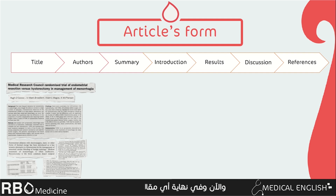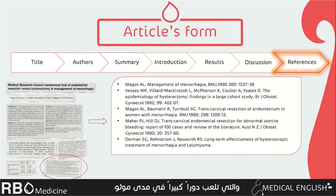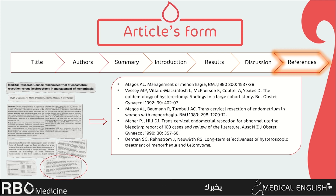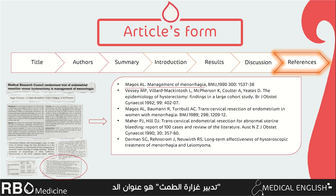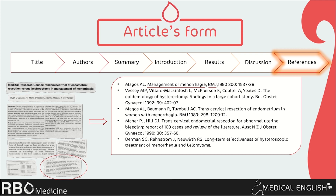At the end of any article, we must see the references, which play a big role in the reliability of the article — this is what is called evidence-based medicine. By adding references, the authors show that their information can be trusted, as it's taken from trustworthy journals or research papers. There are many ways and types to add references. Reading the first one: Magus A.L. is the author's name; 'Management of Menorrhagia' is the title; BMJ refers to the British Medical Journal; 1990 is the year of issue; 300 is the issue number; and pages 38 to 1537 indicate where to find the study.